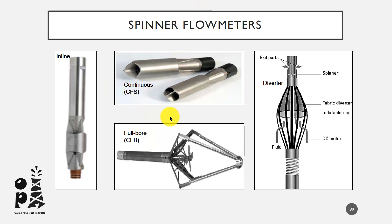The third type is the full-bore flow meter, which has larger blades that are exposed to a greater part of the flow cross-section. When the blades collapse, the tool OD becomes 1.116 inches to pass through the tubing and other restrictions. They expand and start turning when the cross-section becomes sufficiently larger. Full-bore flow meters have good sensitivity and they can be run for a wide range of flow rates and velocities.